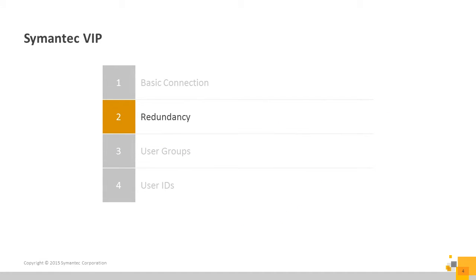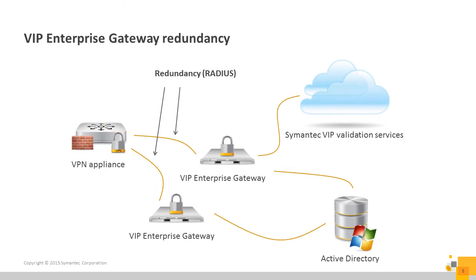In a production environment, it makes sense to talk about redundancy. What if one Enterprise Gateway or LDAP server needs to be rebooted? VIP Enterprise Gateway easily supports redundancy and the software is free with the VIP service. Since the VPN server or application up front uses RADIUS to connect to VIP Enterprise Gateway, high availability is easy to achieve. Just configure the RADIUS server entries on the VPN server for the name or IP of the VIP Enterprise Gateway servers and use the appropriate ports. RADIUS is a connectionless protocol, so if a VIP Enterprise Gateway server fails, the front-end server will automatically fail over to the next VIP Enterprise Gateway in line.